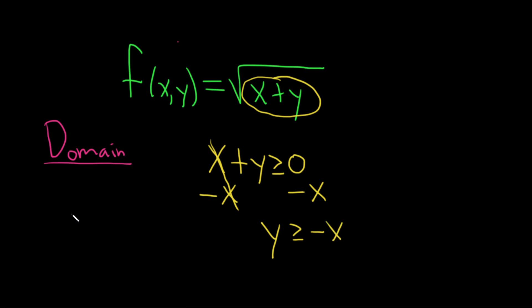So the domain is simply the set of all ordered pairs x comma y such that y is greater than or equal to negative x. Now you could have chosen to solve for x instead by subtracting y, but I did it this way because now it's easier to think about the graph of the domain.